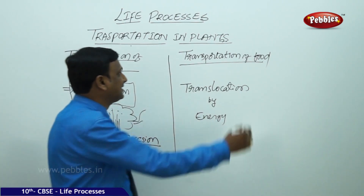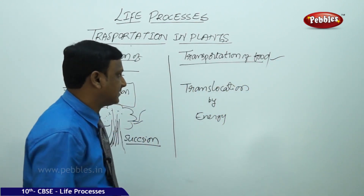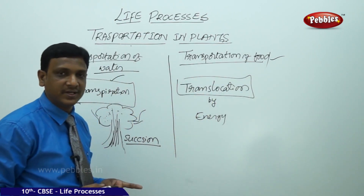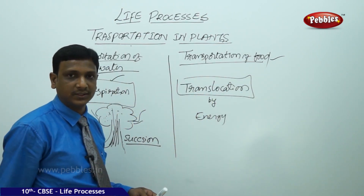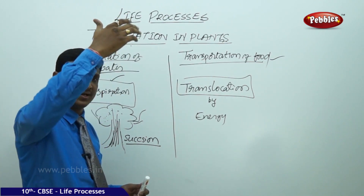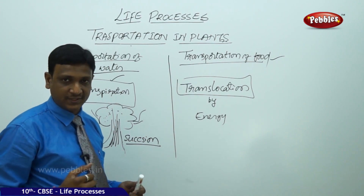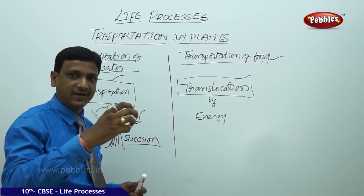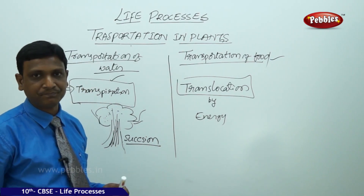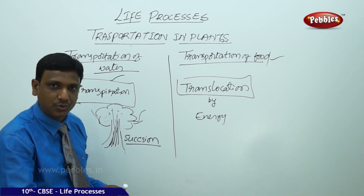The transportation of food is not achieved by a simple physical process. The transport of food is called translocation. The food has to be transported from one part to another — not always in one direction. Sometimes to the top parts, sometimes to the bottom parts. When leaves prepare food, sometimes it is transported to the root and stored in the root, meaning downward translocation.